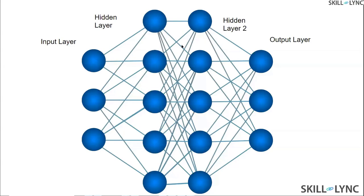Linear algebra is extremely important in machine learning. In the hidden layers, you need to take the initial input from the input layer — which is in matrix form — and represent it in a lower-dimensional form. A very common matrix operation called convolution is used for this dimensionality reduction.